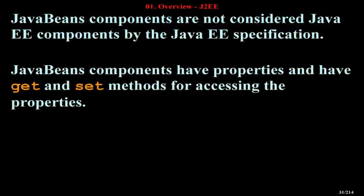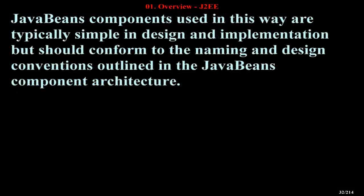JavaBeans components are not considered Java EE components by the Java EE specification. JavaBeans components have properties and have get and set methods for accessing the properties. Components used in this way are typically simple in design and implementation but should conform to the naming and design conventions outlined in the JavaBeans Component Architecture.